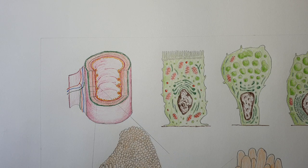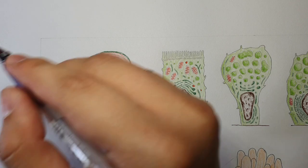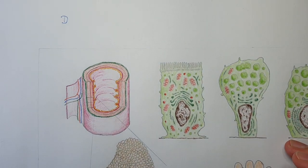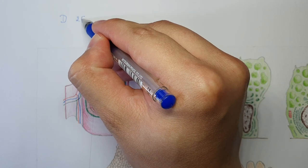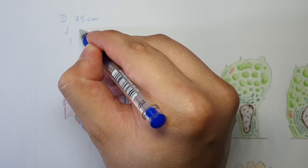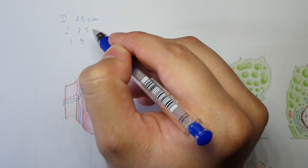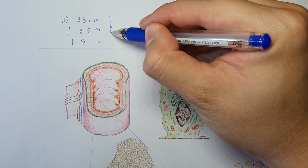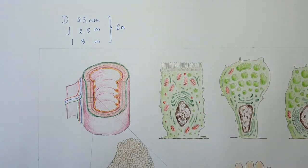The small intestine is a part of the GI system and consists of three parts: the duodenum, which is about 25 centimeters long, then the jejunum and ileum that are about two and a half and three meters long respectively. Together these three parts of the small intestine are about six meters long.